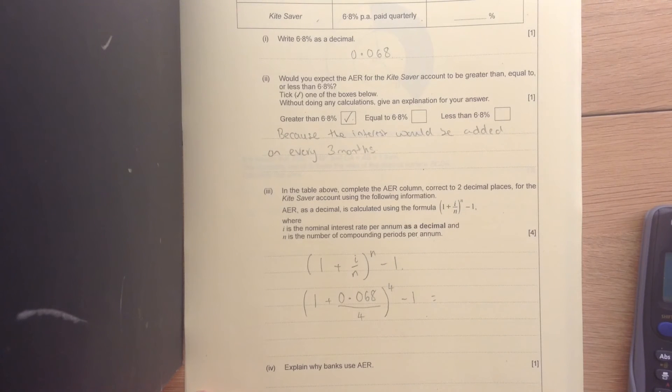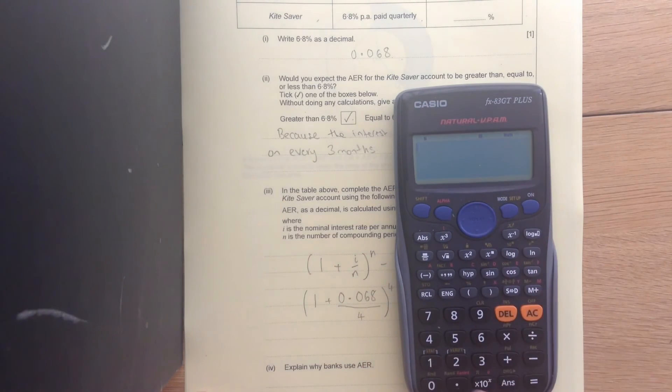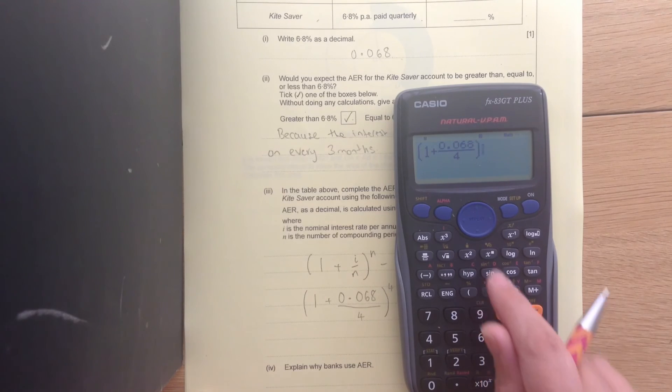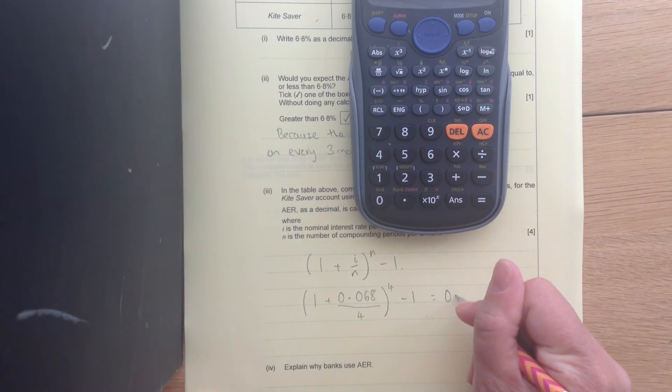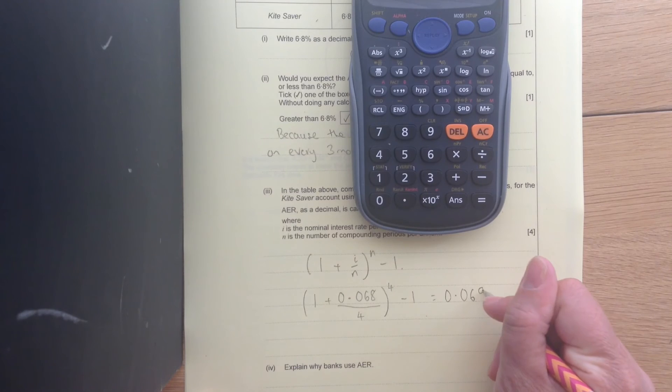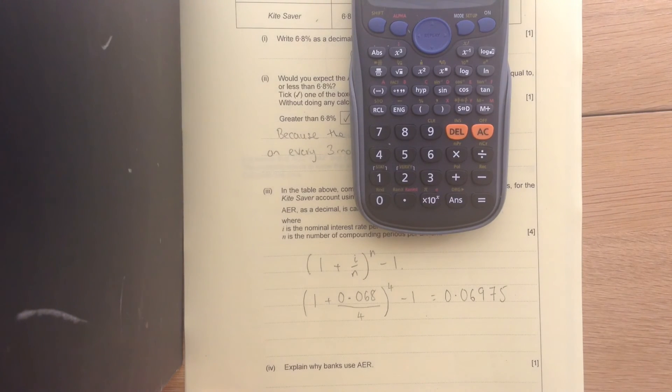So this is the equivalent annual rate. So on our calculator, we're going to do bracket, 1 plus 0.068 over 4, close our bracket, to the power of 4, take away 1. And we get that. Which, as a percentage, multiplied by 100 to turn it into a percentage, we're going to get 6.98%.